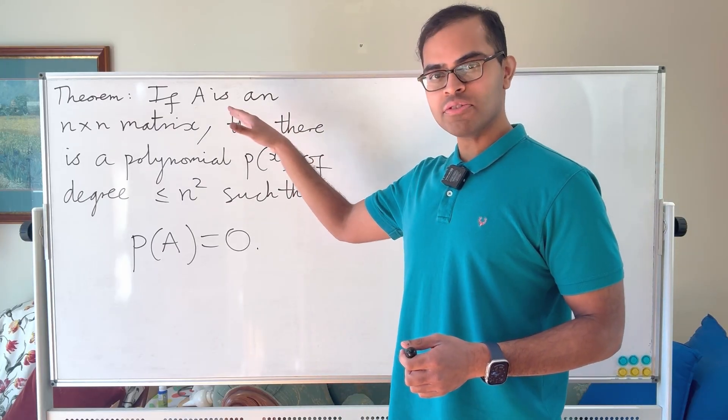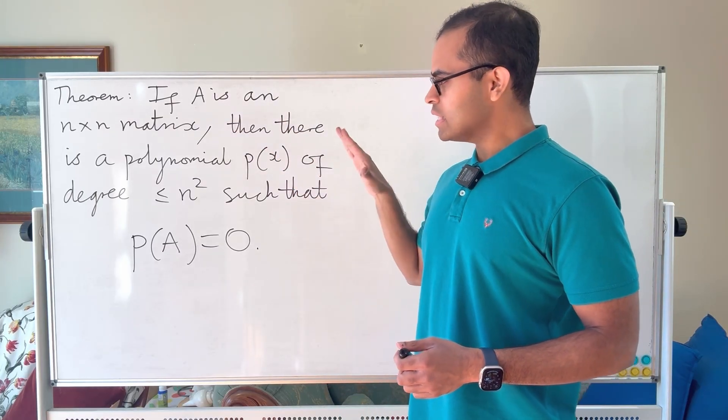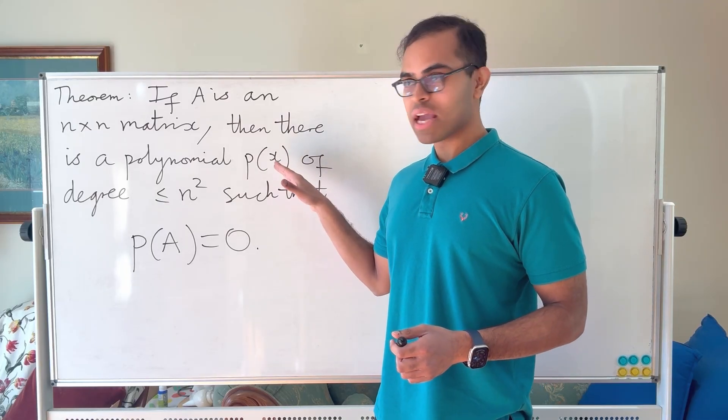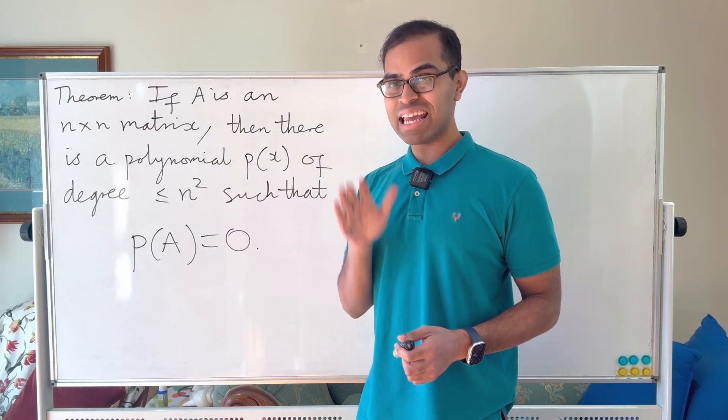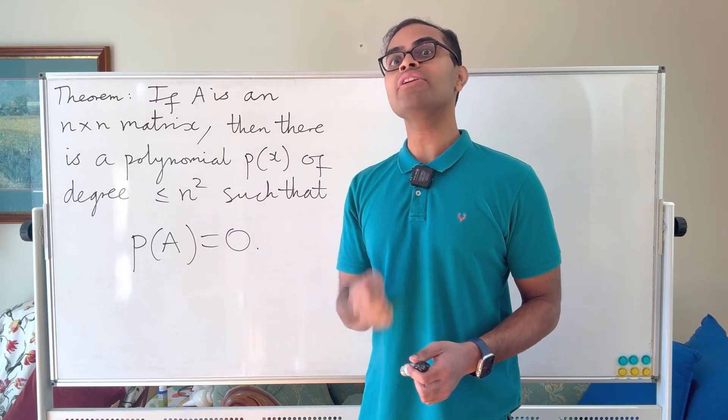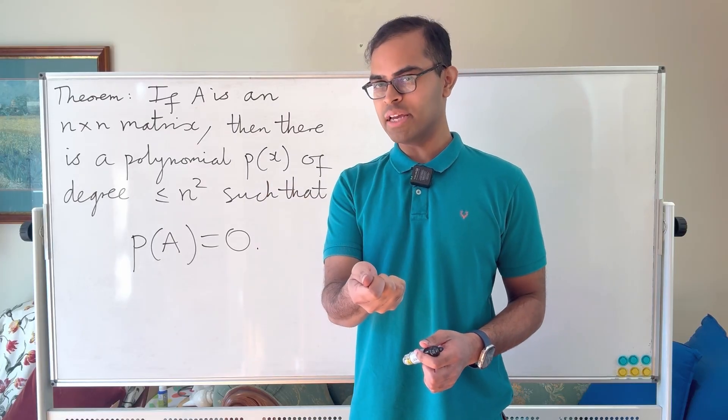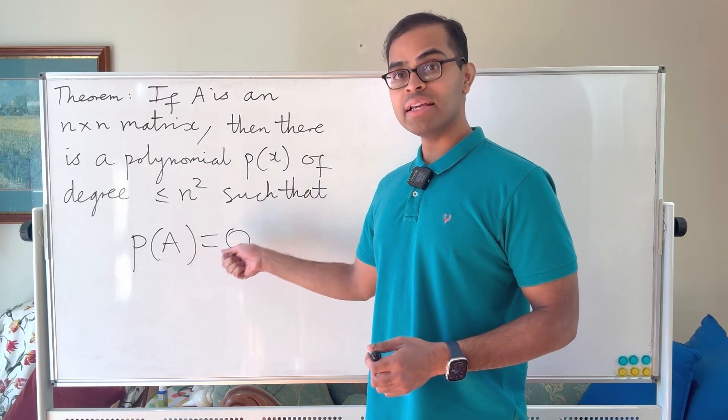So we start off with an n by n matrix A, and the theorem states there is a polynomial P of x of degree less than or equal to n squared, which is the number of entries in the matrix, so that P of A is equal to 0.